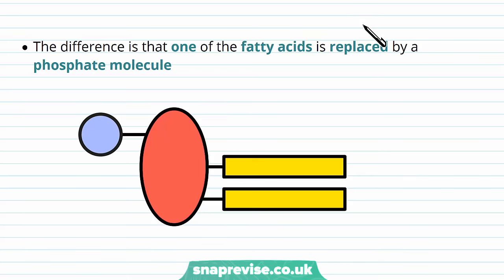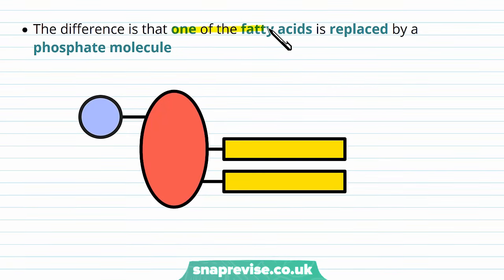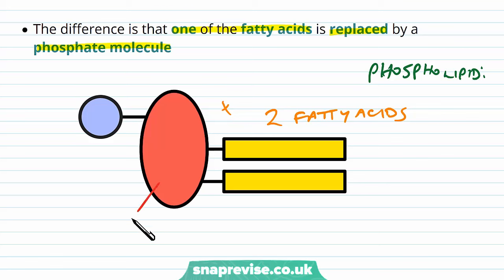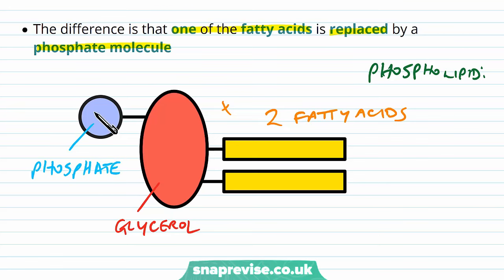The difference between a triglyceride and a phospholipid is that one of the fatty acids is taken away and replaced by a phosphate molecule. So in a phospholipid we only have two fatty acids. We have the original glycerol molecule still present, bound to those two fatty acids, and now we have this additional phosphate group attached to the glycerol more or less on the other side to the fatty acids.